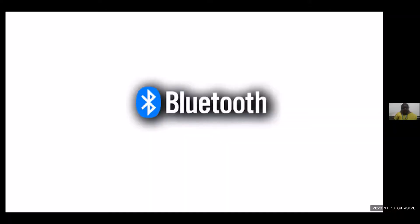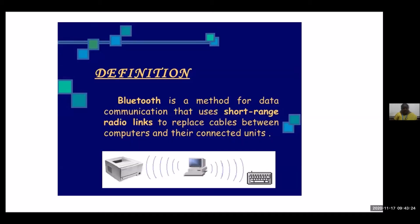Bluetooth is a wireless technology standard used for exchanging data between fixed and mobile devices over short ranges, using UHF ultra high frequency radio waves in the industrial, scientific, and medical radio bands from 2.402 GHz to 2.48 GHz, and building personal area networks (PANs).